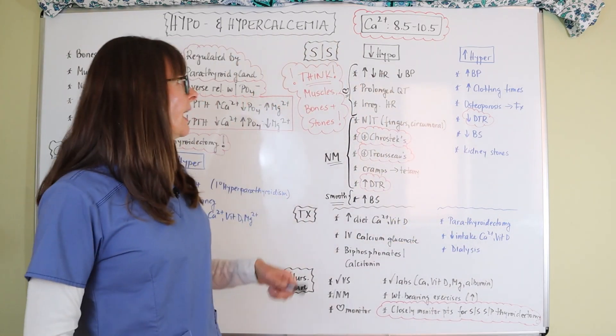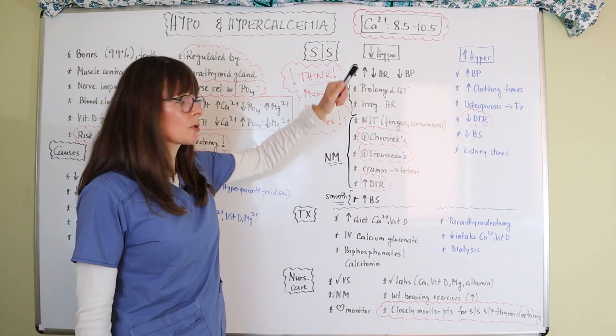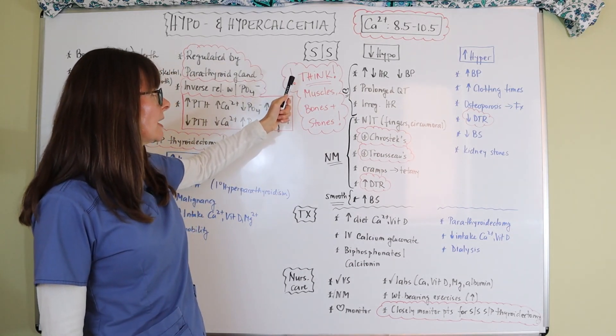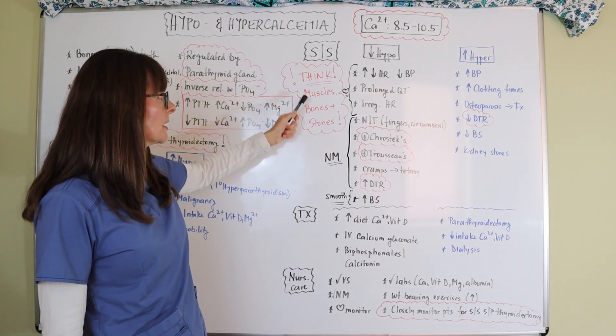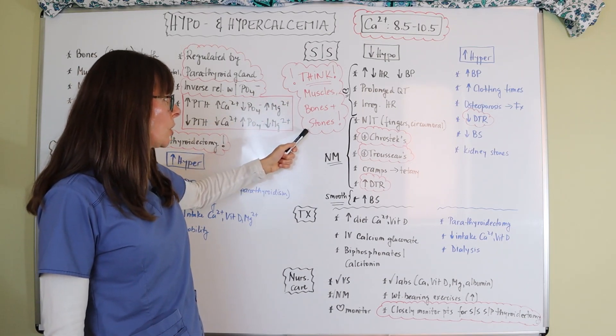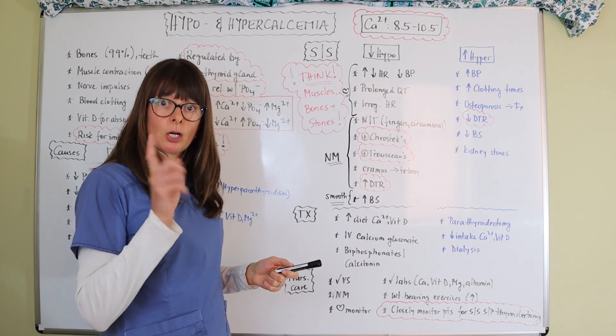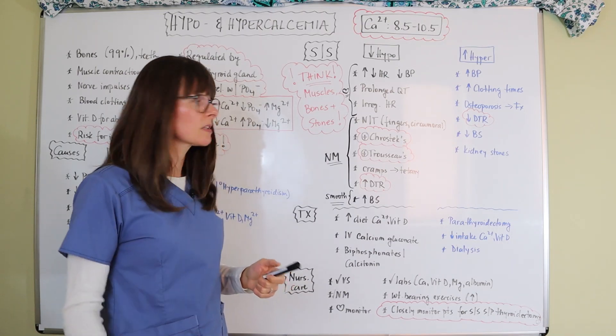Now over here we have signs and symptoms. So as always, here's my little tidbit for you. Signs and symptoms for calcium imbalances always think muscles, bones, and stones. And again, muscles, we have to think about cardiac, skeletal, as well as smooth muscle.